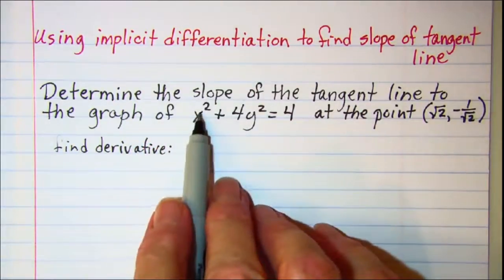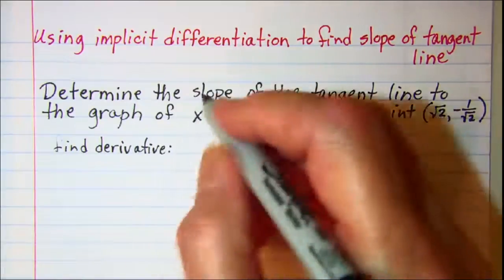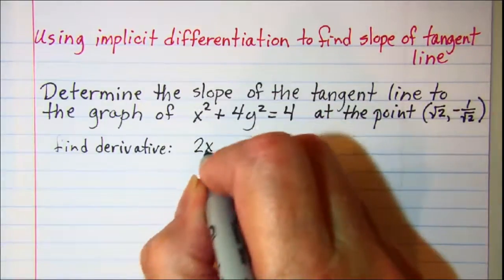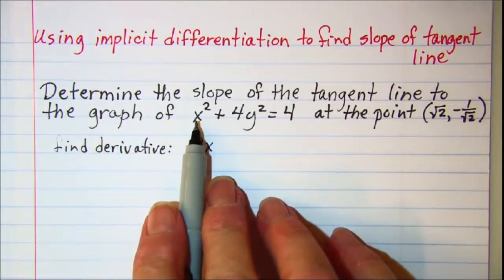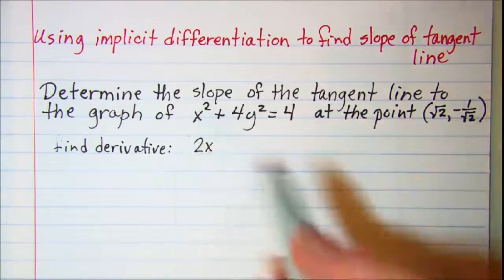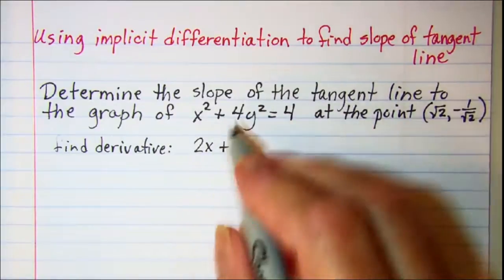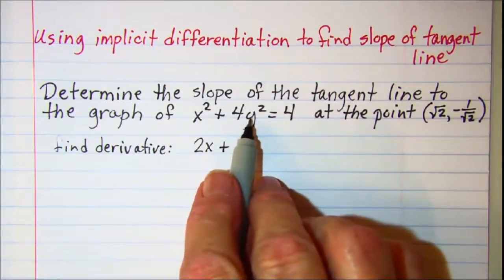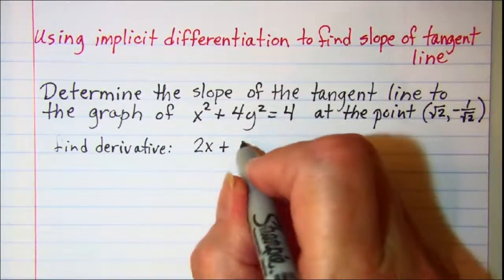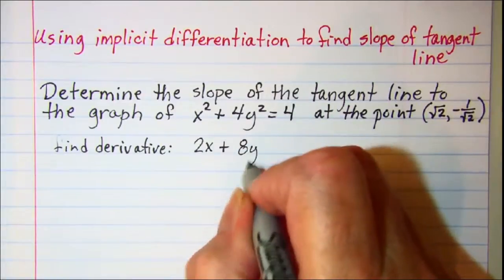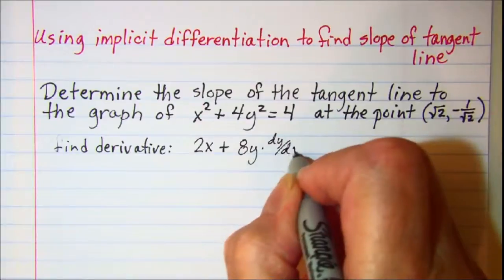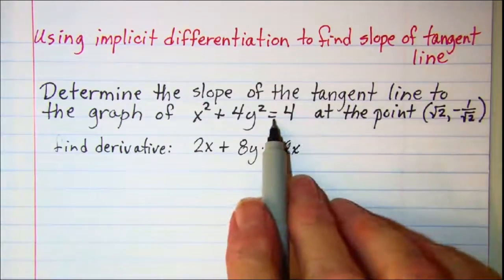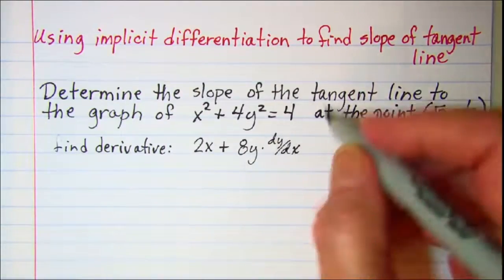The derivative of x squared is 2x and since that term is already an x we don't need to multiply by anything for the chain rule. The derivative of 4y squared is 8y, but we need to multiply by dy dx for the chain rule. And then the derivative of 4 is 0.